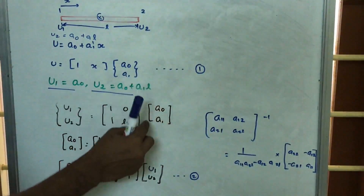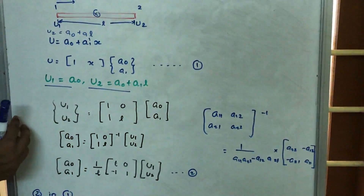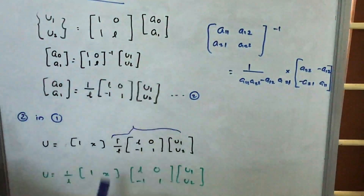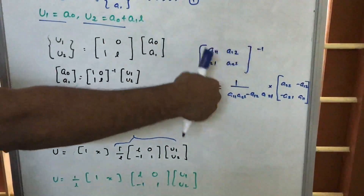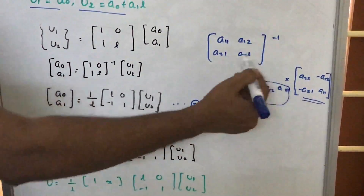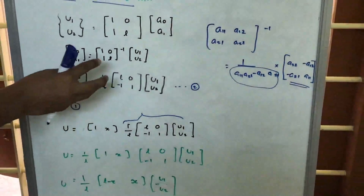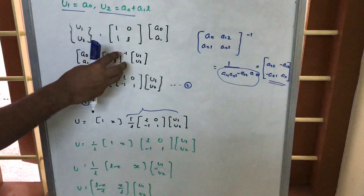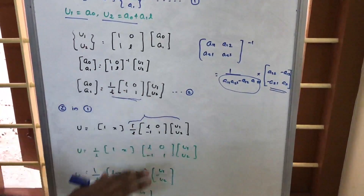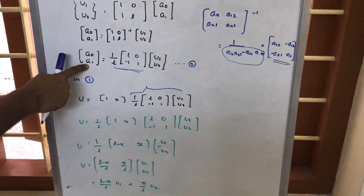From this matrix form, we can find a0 and a1 by taking the matrix to the opposite side so that it becomes an inverse. So [a0, a1] = [[1, 0], [1, L]] inverse * [u1, u2]. For finding the inverse of a matrix, we need the adjoint and the determinant of the matrix. The adjoint divided by the determinant gives the inverse. The matrix inverse is obtained as (1/L) * [[L, 0], [-1, 1]].